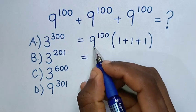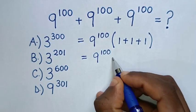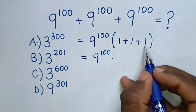Then it is equal to 9 power of 100, then times 1 plus 1 plus 1 is 3.